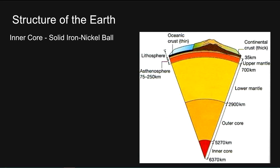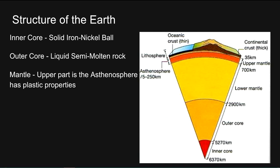The structure of the Earth. Starting with the inner core: it's a solid iron-nickel ball, very hot at over 5,000 degrees Celsius, around 1,300 kilometres thick. The outer core is liquid semi-molten rock containing oxygen and silicon, around 2,200 kilometres thick. Then we have the mantle, which is composed of silicate rocks such as olivine, and can be both solid and liquid depending on conditions. The upper part of the mantle is the Asthenosphere, which has plastic properties that allow it to flow under pressure, and hence there are convection currents in the mantle at temperatures over 5,000 degrees Celsius.